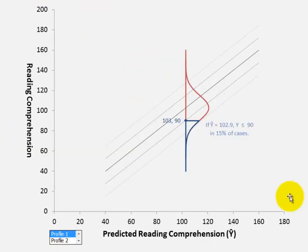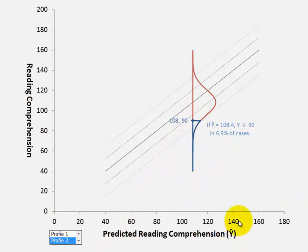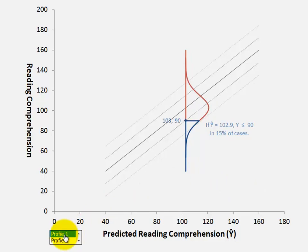We can see this with the graph. With profile 1, about 15% of cases score 90 or lower. With profile 2, about 7 or 6.9% of cases score 90 or lower. So not very common with profile 1, but much less common with profile 2.